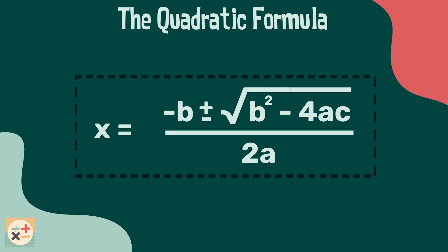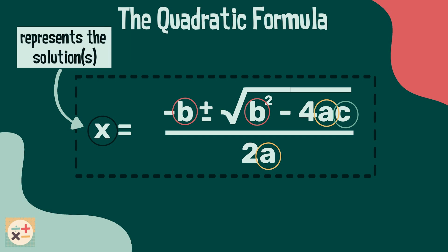Let's have a look at the formula in more detail. First we are given some variables x, a, b and c. The x value represents the solution or solutions to the quadratic equation. This is the answer we are trying to find out.